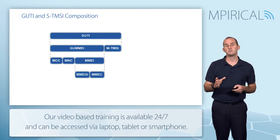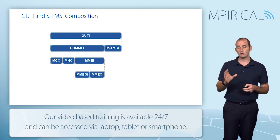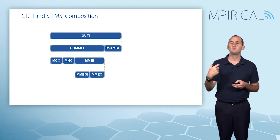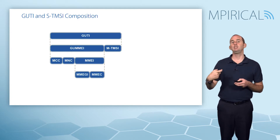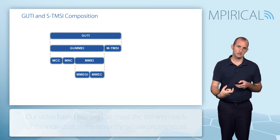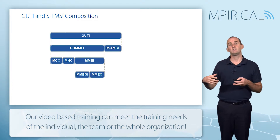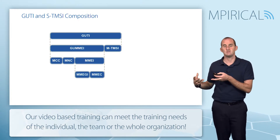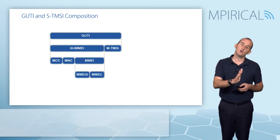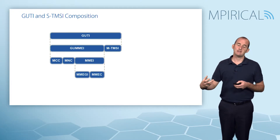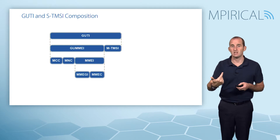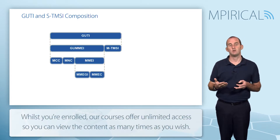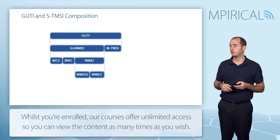There will be times — and this is not uncommon — when a packet TMSI from GPRS is actually used to formulate a GUTI. The reason for this is that when a device has been on 3G and it enters 4G, it can take that packet TMSI and turn it into a GUTI to use when it communicates with the LTE network. To do that, a mapping process must take place.